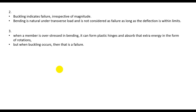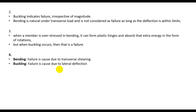For buckling, occurrence itself represents failure — it may cause the structure to fail. For bending, failure is caused due to transverse shear. For buckling, failure is caused due to lateral deflection. Finally, bending is a state of stress, but buckling is a state of instability.